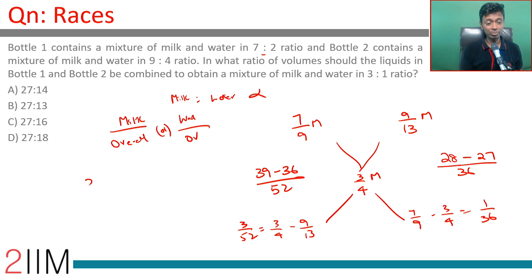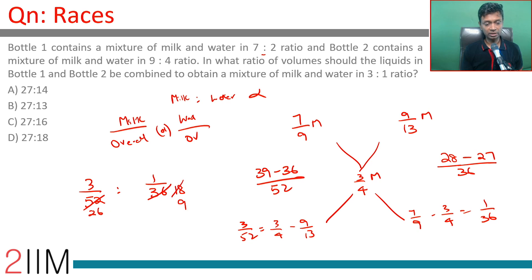So the bottles should be mixed in the ratio 3/52 : 1/36. Simplifying — multiply through and cancel common factors: 3/52 : 1/36 becomes 3×36 : 1×52, which simplifies to 9:13. So the ratio is 27:13.